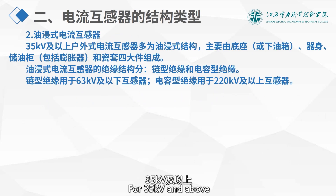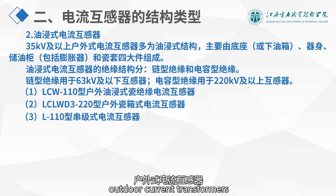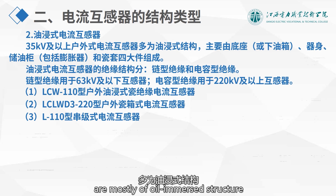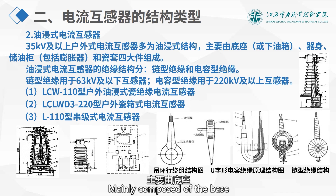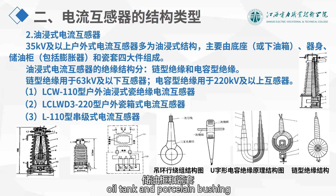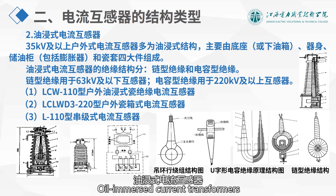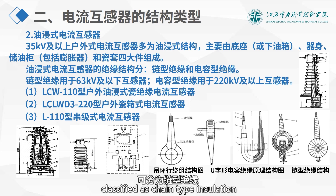For 35 kV and above, outdoor current transformers are mostly of oil-immersed structure, mainly composed of the base body, oil tank, and porcelain bushing as the four main components. Oil-immersed current transformers have two types of insulation structures: chain type insulation and capacitive type insulation.